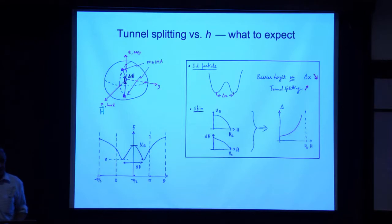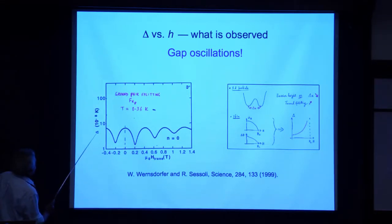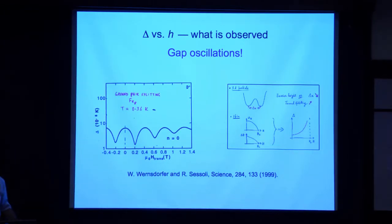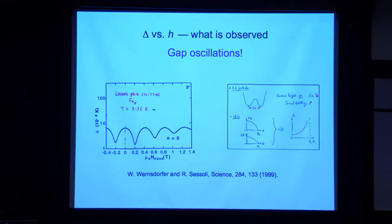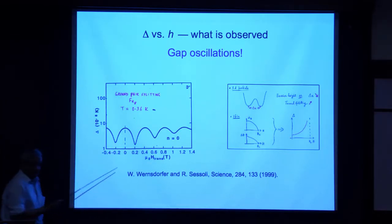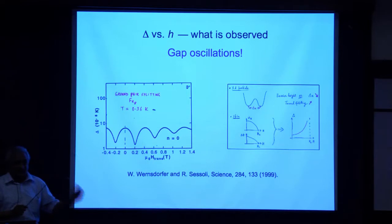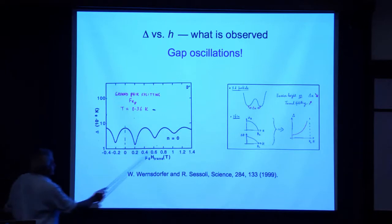So this is what we expect: the tunnel splitting should increase as a function of the magnetic field. But this is what we actually see. What's plotted here is the tunnel splitting delta, and I draw your attention to the scale on the y-axis — it's in units of 10 to the power minus 8 Kelvin, so this is 10 nano-Kelvin, which is about one pico-electron volt. This is not a variation with time — it's a plot of the energy difference between the first two energy levels. Every point on this curve represents a static configuration. We're not seeing time-dependent flip-flop; the energy splitting is behaving like this.